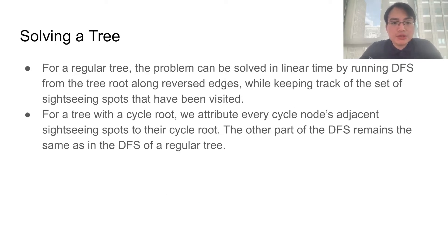If we have a regular tree, the problem can be solved in linear time by running DFS from the tree root along reversed edges. We can keep track of which set of sightseeing spots have been visited so far in our DFS. For a tree with a cycle root, we just need a minor modification.